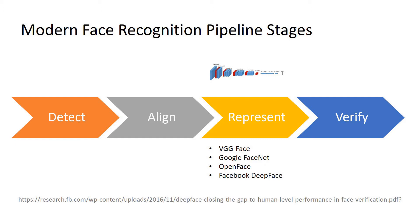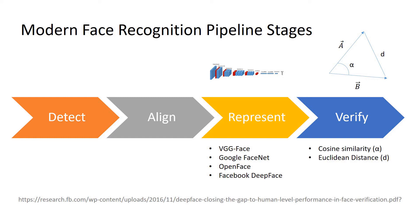Suppose that A and B are two face images and we find the vector embeddings of these face images with one of those face recognition models. We can find the similarity of these vectors using the angle or distance between them. Here, alpha refers to cosine similarity whereas d refers to Euclidean distance.